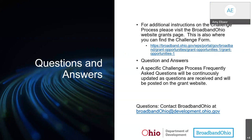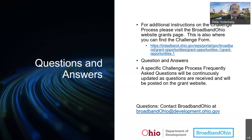There is a question asking who the Broadband Expansion Authority members are that have been appointed by the governor, the house, and the Senate. Right now, Greg Sample has been appointed by the governor, which gives us a quorum to be able to operate as the authority. The Ohio House and Ohio Senate have still yet to name who their authority members are at this time.